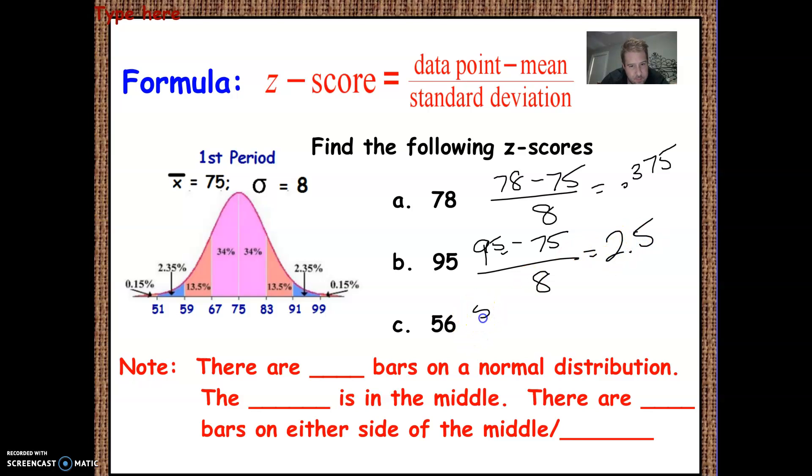56. Okay, so 56 minus 75. 56 minus 75 is negative 19. And then divide that by 8, and you get negative 2.375. So these are both pretty rare scores. One's way above and one's way below.